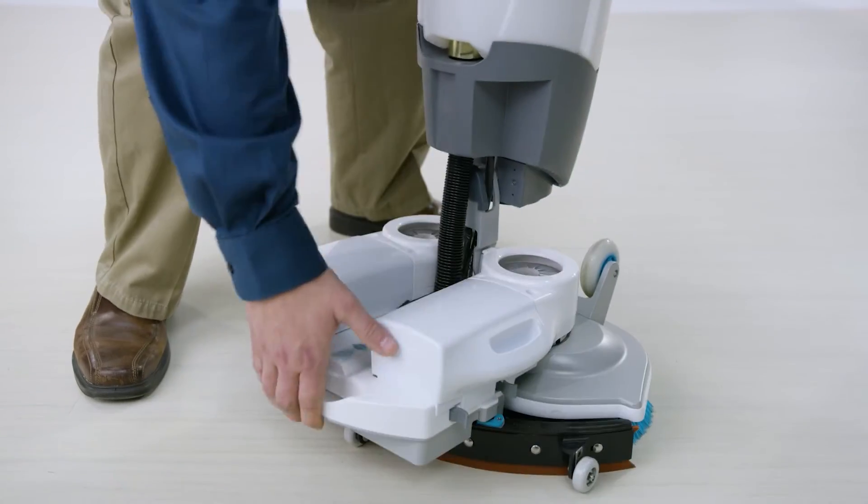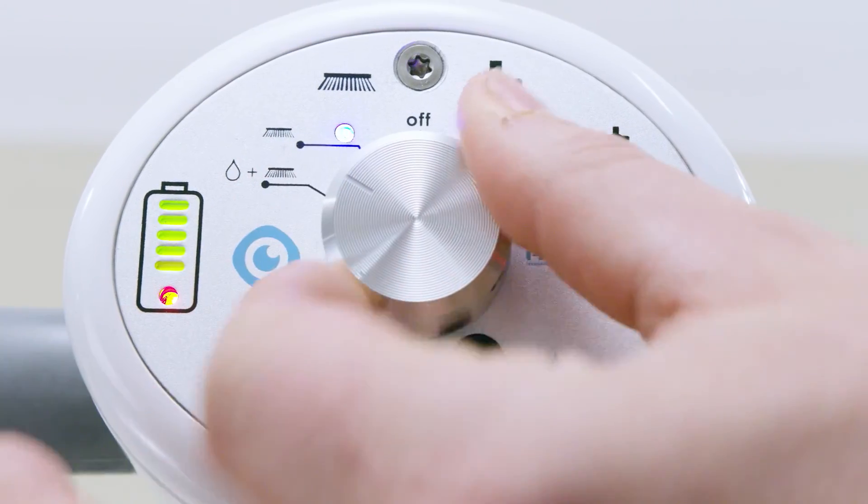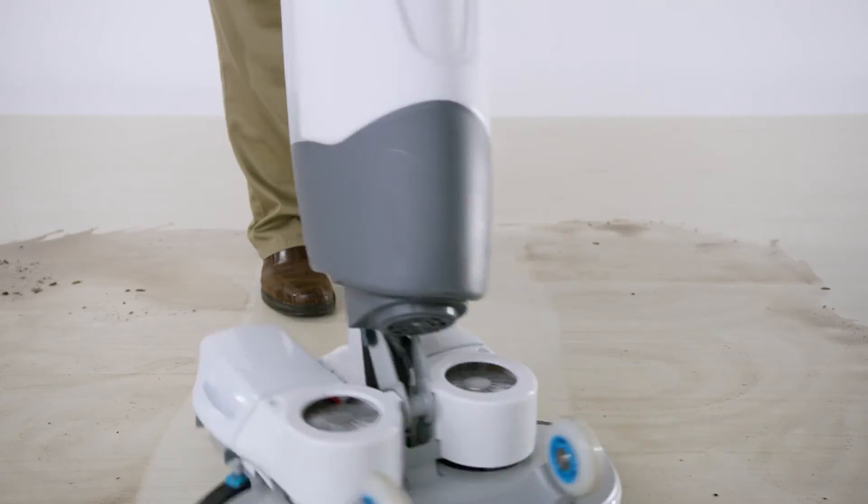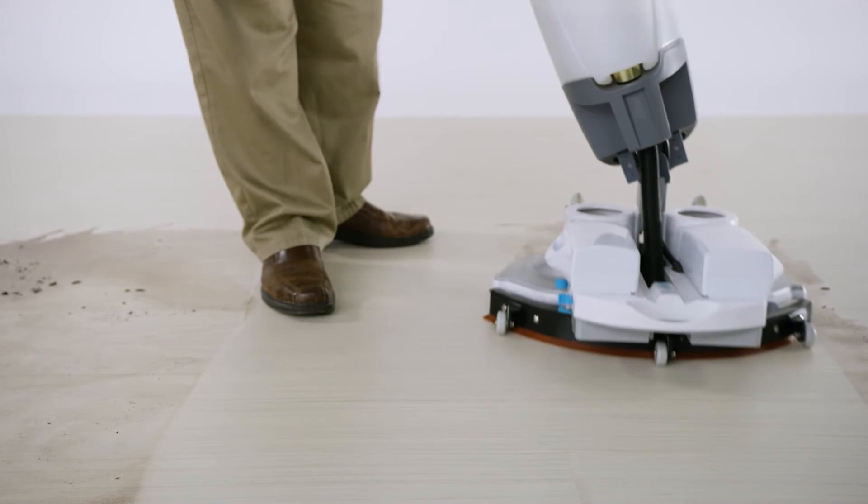Unlike your smelly mop, the i-Mop always puts down clean water, scrubs the dirt and grime with two counter-rotating brushes, and recovers that filthy water with a squeegee and vacuum.